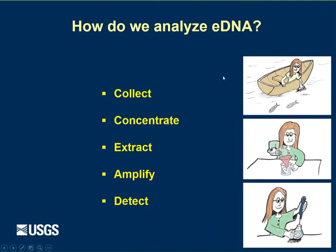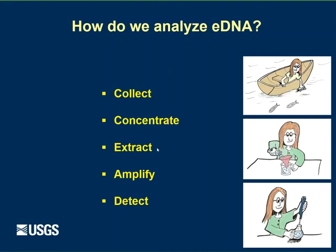So how do we analyze DNA? The first thing we do is go out and collect a water sample or some other type of sample. For a lot of our studies, it's literally as simple as taking a tube and scooping some water off the surface. Then once you have that sample, you have to concentrate the cells in it, either by filtration or centrifugation. Once you have that concentrate, you extract all the DNA from the sample. The DNA is going to contain the organism you're looking for, but also lots of bacterial DNA and fungal DNA. Because the DNA is in low copy numbers, the next step is to amplify the DNA to make millions of copies.